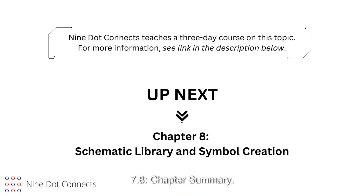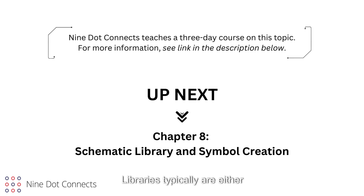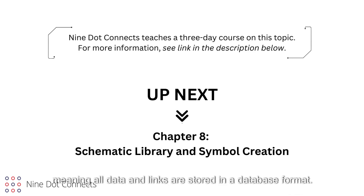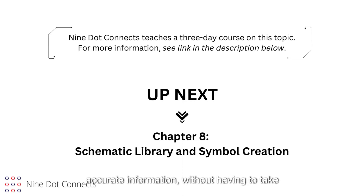Section 7.8: Chapter Summary. Component libraries are vital to any design because they store the symbolic, physical, and parametric data for a component. Libraries are typically either symbol-centric, meaning each component has all the data linked to its symbol, or database libraries, meaning all data and links are stored in a database format. It is extremely important that libraries be built and maintained with consistency, so that reports can be generated with accurate information without having to clean up errors and inconsistencies.